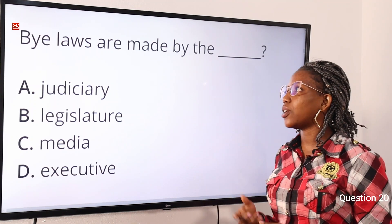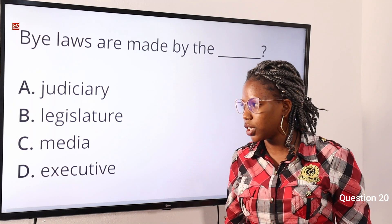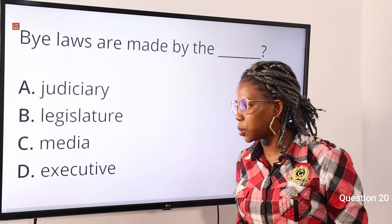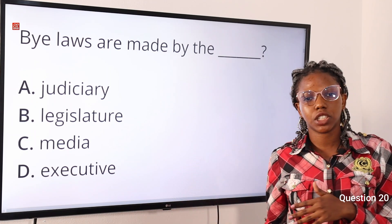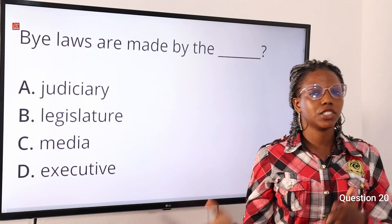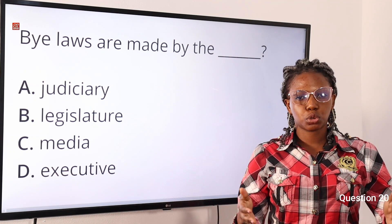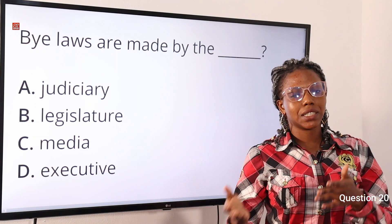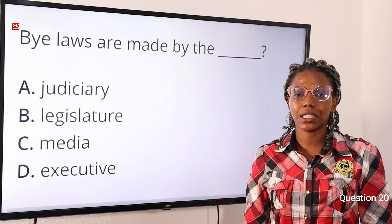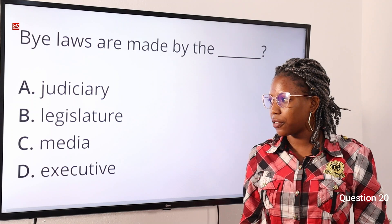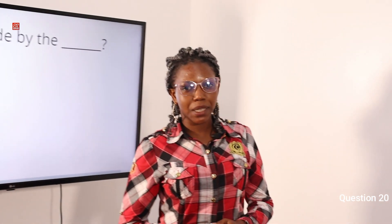Question twenty: bylaws are made by the — option A: judiciary, option B: legislature, option C: media, option D: executive. The answer is option B, legislature. Bylaws are made by the legislature, though through the concept of delegated legislation, they can be entrusted to the executive arm. We've come to the end of the segment — please hit the like button, subscribe, and tap the bell notification to be informed when the next videos are released.